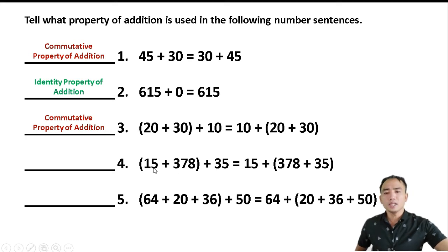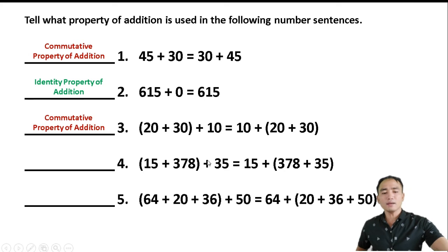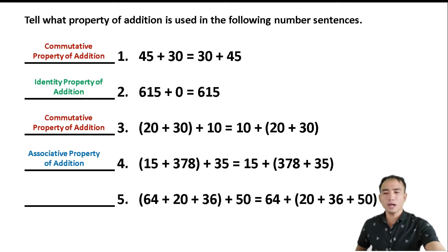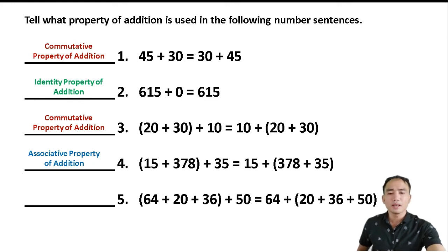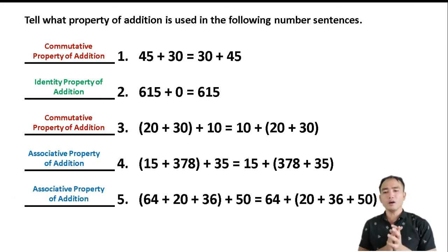Number 4: (15 plus 378) plus 35 equals 15 plus (378 plus 35). Here the groupings do not affect the answer, so this is the Associative or Grouping Property of Addition. Number 5: (64 plus 20) plus 36 plus 50 equals 64 plus (20 plus 36) plus 50 — this is also the Associative Property of Addition.